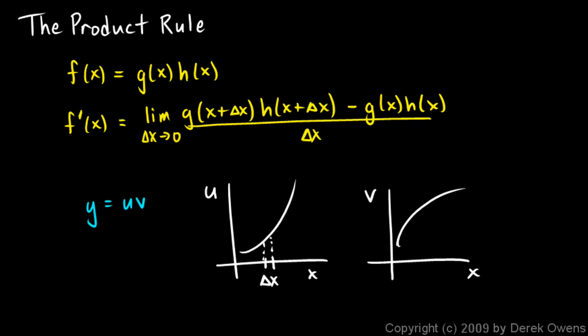But what you should see is that if you have a little increment here, delta x, that's going to correspond to a little increment here, delta u. And a little increment here on this function, delta x, will correspond to a little increment here, delta v.